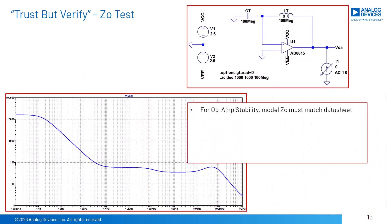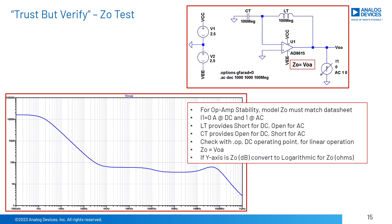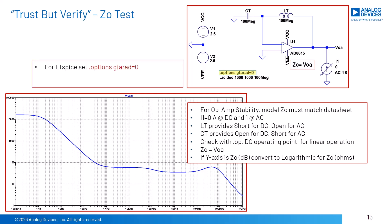Op-amp stability analysis simulations must use macromodels whose ZO matches the datasheet — either ZO or Zout should be given. For any op-amp macromodel, trust but verify that the ZO is correct when compared to the datasheet using this test circuit. I1 is set for 0-amp DC and 1-amp AC. At DC, inductor LT is a short and capacitor CT is an open; check the DC operating point with a dot-op simulation to ensure inputs and output are in the linear operating region. For AC, capacitor CT is a short and inductor LT is an open, so the op-amp ZO is measured as VOA. If the y-axis is ZO in dB, convert to logarithmic for ZO in ohms. For LTSpice, ensure dot options GF equals 0 is used to eliminate any DC current in capacitor CT, which would give an incorrect DC operating point.